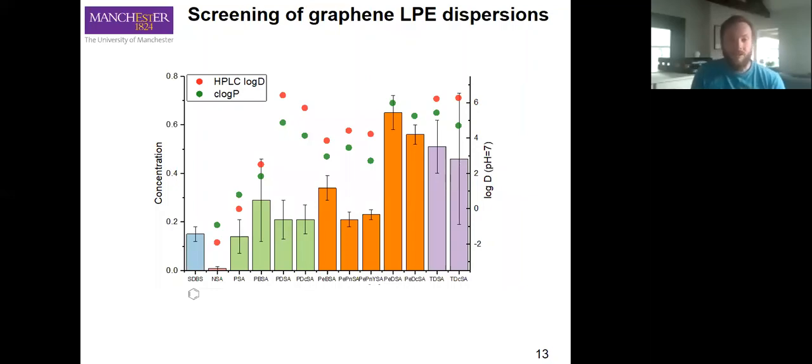We start to screen these LPE dispersions. We often use a mix of log P, log D to tell us how these stabilizers behave in water. Typically they're not huge fans of being in water, but we can reach reasonably high concentrations with some of our aromatic systems.